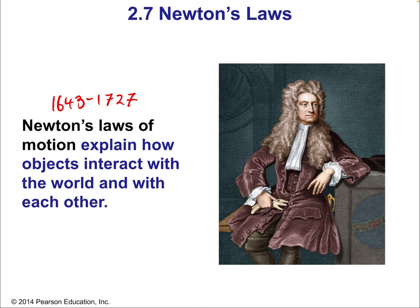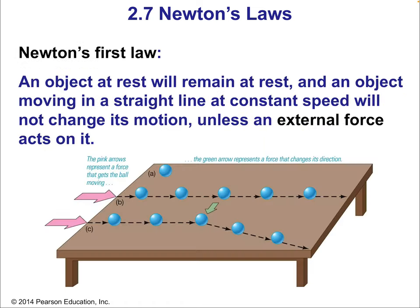Newton's laws of motion explain how objects interact with the world and with each other. Newton's first law says an object at rest will remain at rest, and an object moving in a straight line at constant speed will continue doing so unless an external force acts on it. If you push something across completely smooth ice with no wind resistance, it'll just continue forever. In the real world there are always external forces to stop things, but otherwise inertia will carry things on.